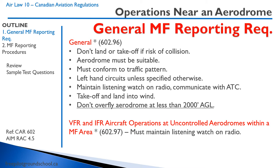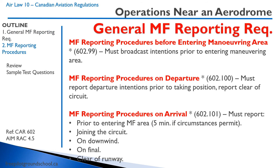At uncontrolled airports within an MF area, you have to maintain a listening watch on the radio. This is in contrast to an aerodrome traffic frequency where you're not required to make radio calls — it's still highly suggested, but not required by law. When at an MF airport, you must broadcast your intentions prior to entering the maneuvering area — that's a taxiway or runway. For example: 'Bancroft traffic, this is Cessna 172 Golf Alpha Bravo Charlie, entering the active runway 27, departure northbound.' On departure, you have to report taking position and report once clear of the circuit.